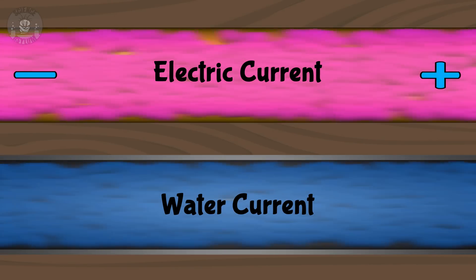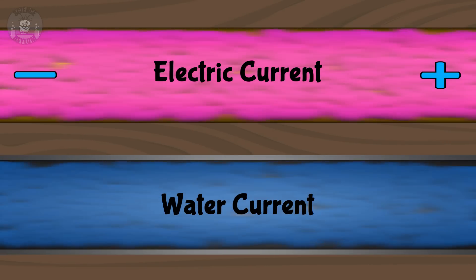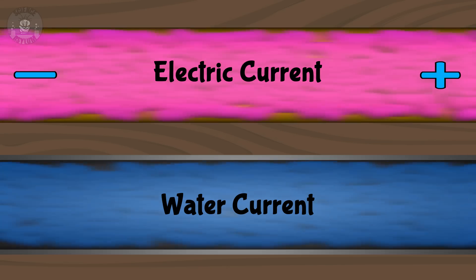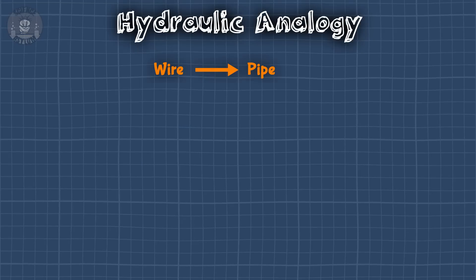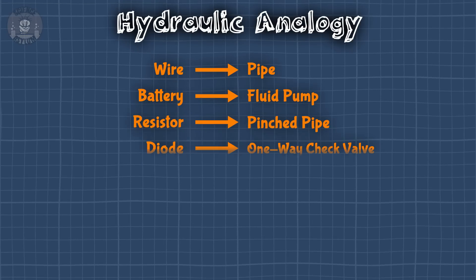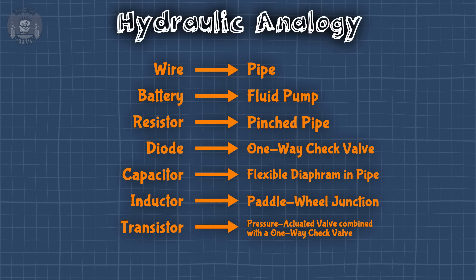What was the original question again? Does charge flow like water? Yeah, kind of. If you're not concerned with where the moving charged particles actually are in the material, then water flow is a good analogy for electric current — so good, in fact, it has a name: the hydraulic analogy. There's a hydraulic equivalent for every circuit component you could imagine. It's kind of fascinating.